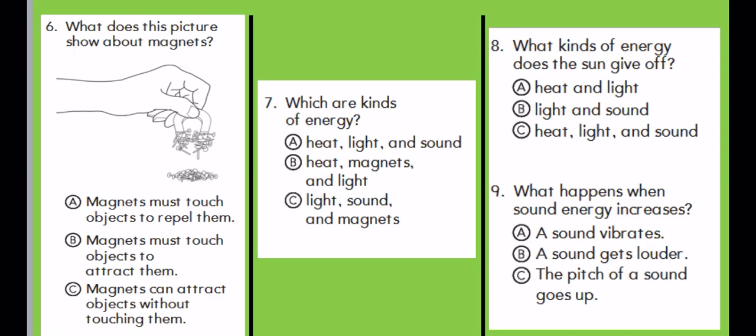Number seven. Which are kinds of energy? I'm gonna read it for you. Tell me if all of them are kinds of energy or not. A, heat, light, and sound. B, heat, magnets, and light. Or C, light, sound, and magnets. Which are kinds of energy? What do you think? A, B, or C?